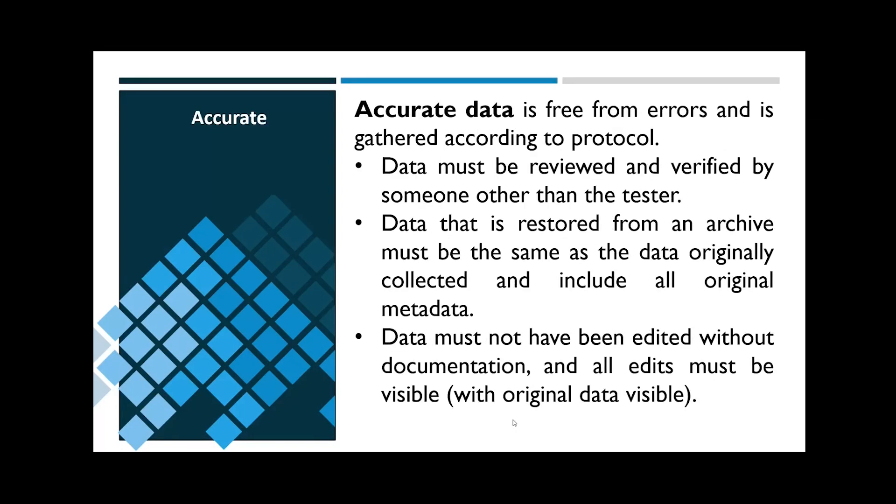Accurate data is free from errors and is gathered according to defined protocols. It must be reviewed and verified by someone other than the tester. Data that has been restored from an archive must be the same as the originally collected data and include all original metadata. Data must also have not been edited without documentation, and every edit that has been documented leaves the original entry visible.